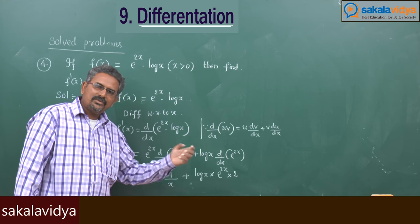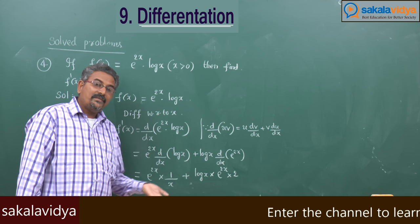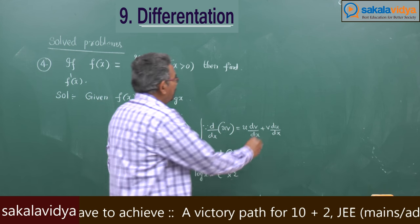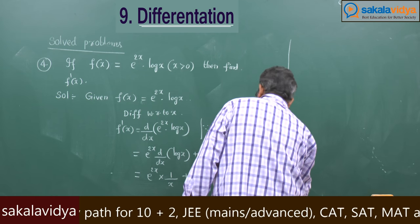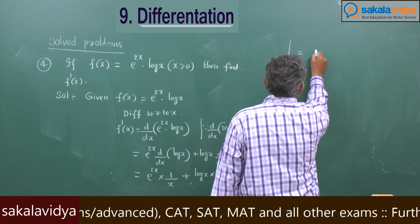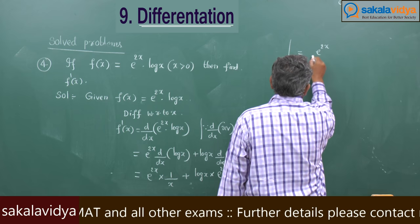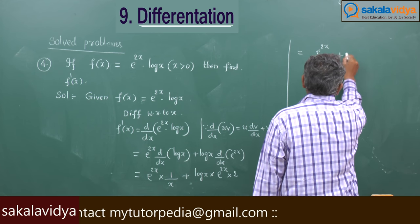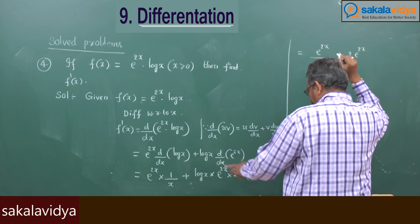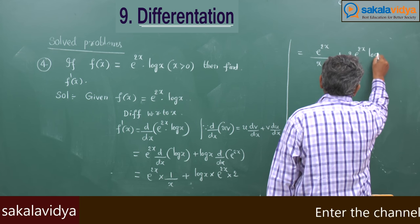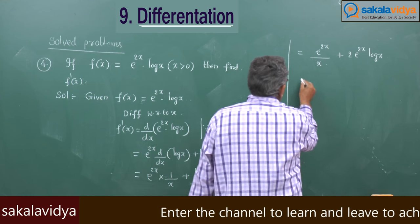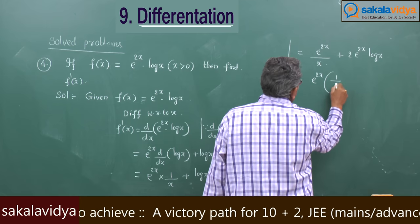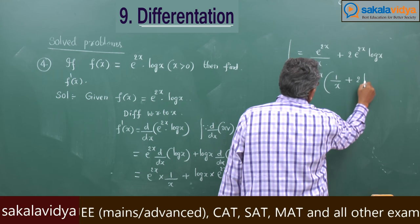Similarly, the derivative of e power 3x is e power 3x into 3. In general, the derivative of e power mx is e power mx into m. Now this can be simplified to e power 2x by x plus 2 e power 2x log x.